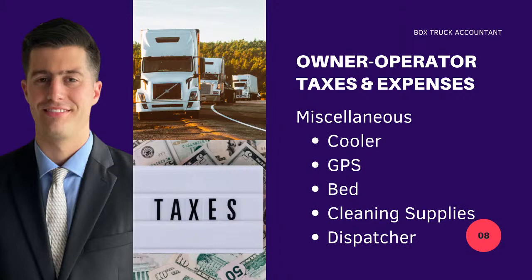Miscellaneous items you might not think about: a cooler if you're packing your lunch — if you go to the grocery store for lunch meat and cheese, that cooler is a business expense. GPS subscription or a Garmin device, cleaning supplies like Windex for your windshield, going through a truck wash — business expense. Paying your dispatcher weekly or monthly to help find loads — business expense. The more you start thinking about what's necessary and ordinary on a daily basis, the more pleasantly surprised you'll be realizing how much you can use to reduce your tax liability.